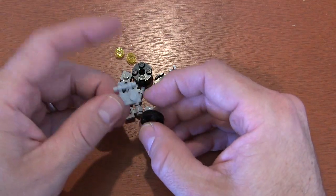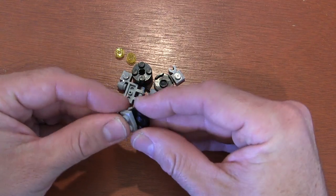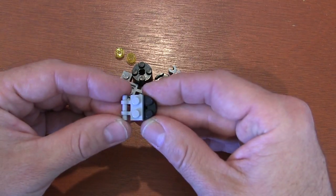Now, on the side of our canister, we get one of these 1x2 plates with open handle on the side. And you just put them on one side of our round brick like that.